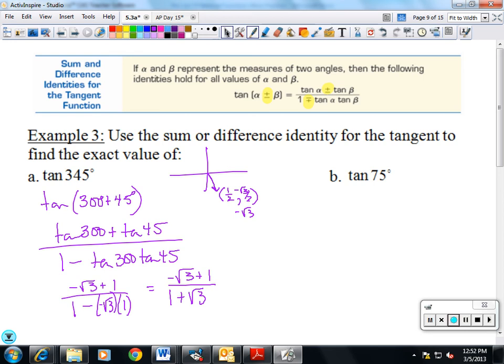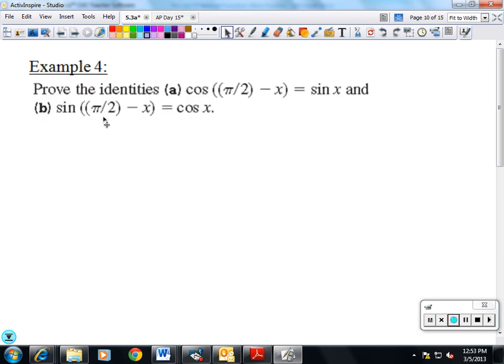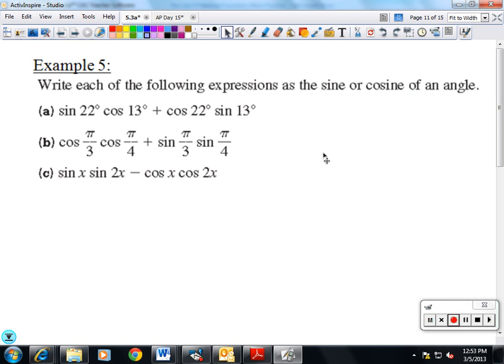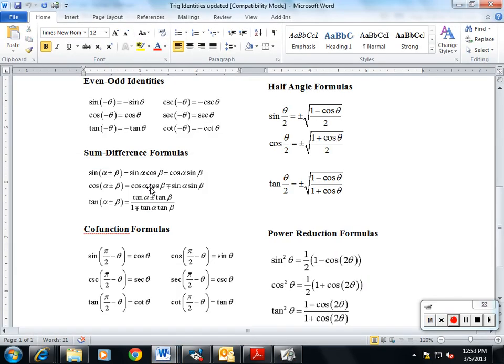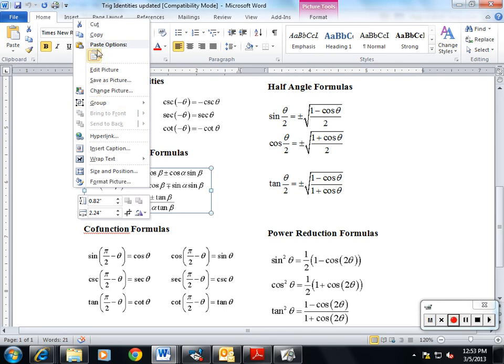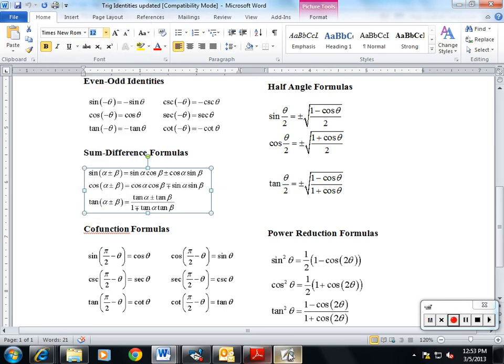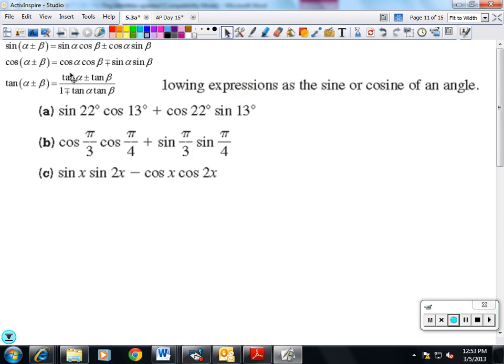Do 75 the same way. I'd probably use 30 and 45. We're skipping that. These. I'm going to look at my identities. I'm going to grab my sum and difference. Copy. I'm going to paste them in where I can look at them.